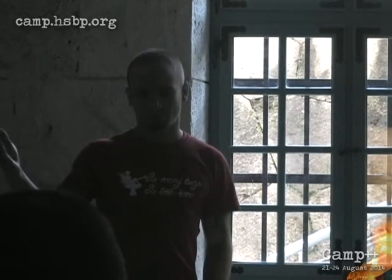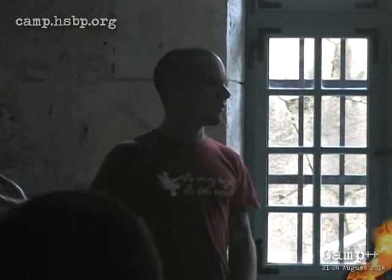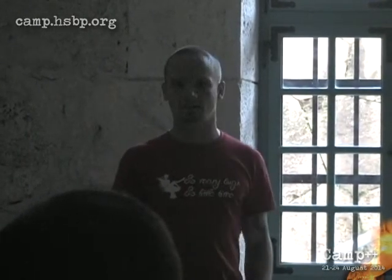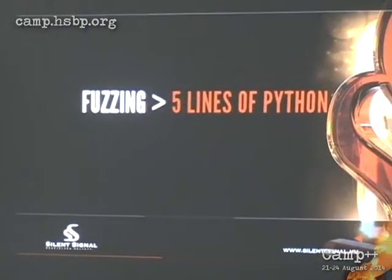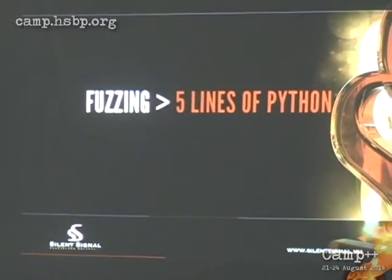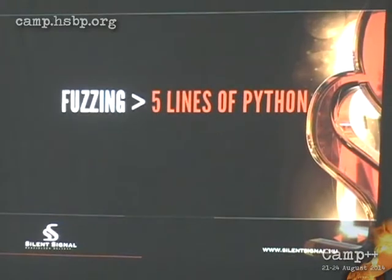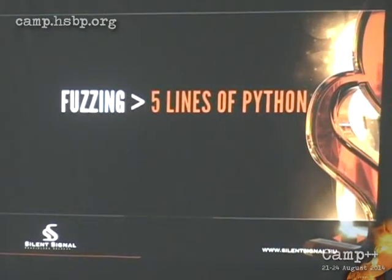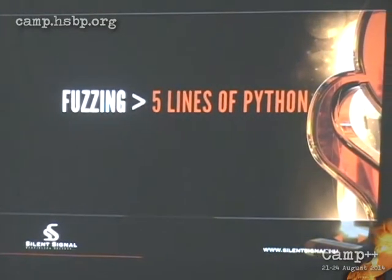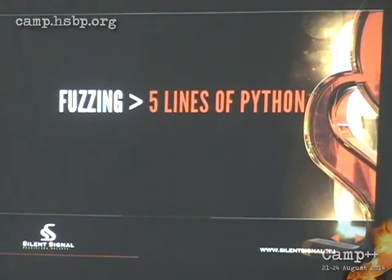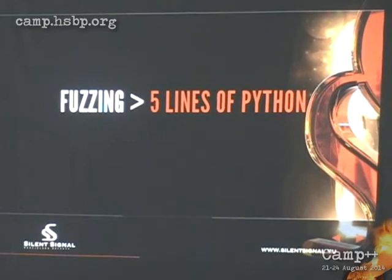Charlie Miller said that he wrote five lines of Python and he found lots of bugs, but in reality what I realized is that fuzzing is much more than five lines of Python — it's much more than just spilling out random data.